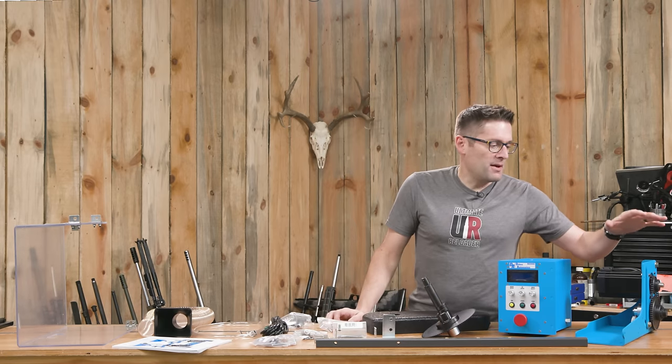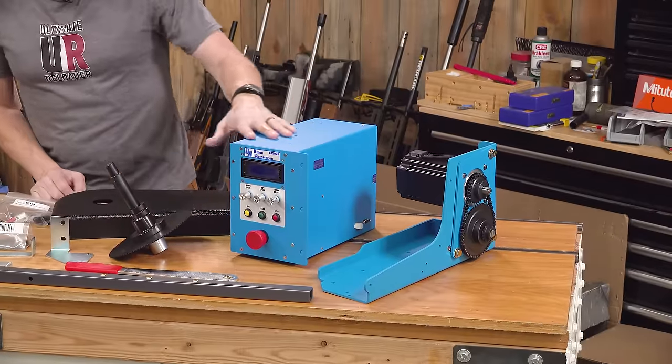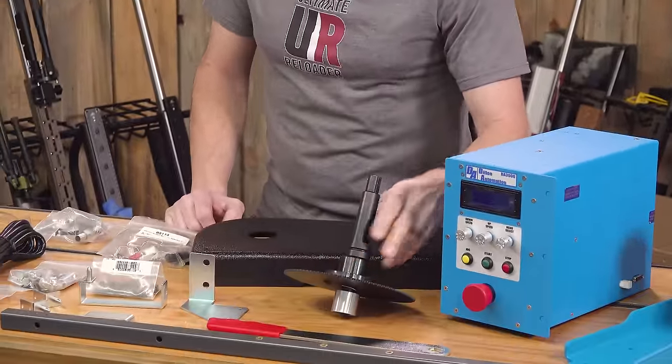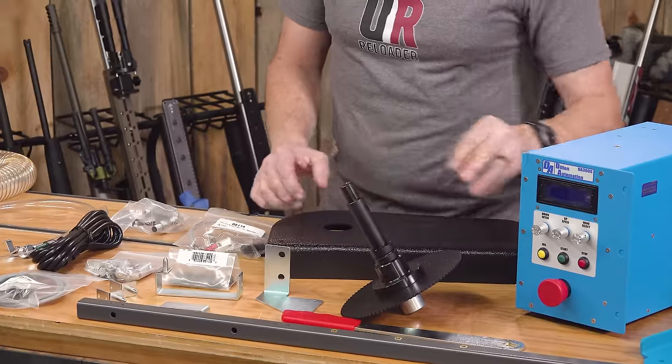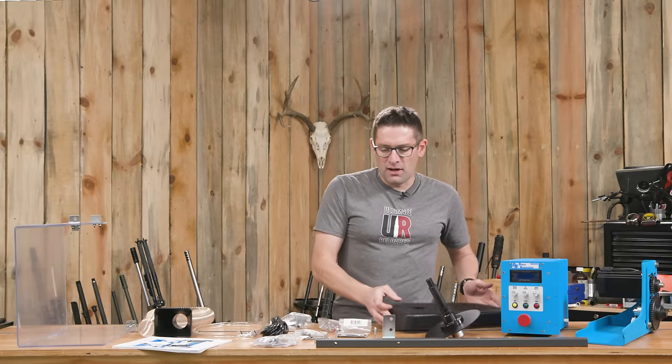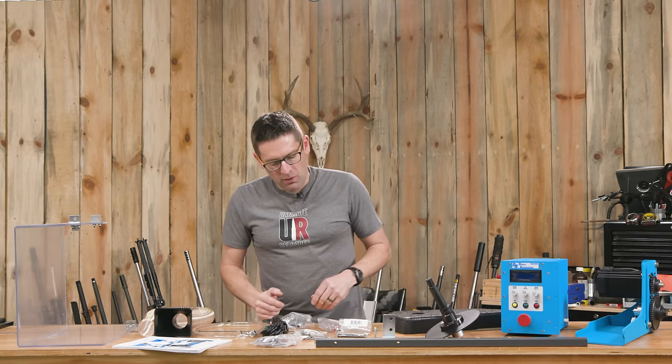We've got the main mounting bracket and motor. We've got the control box. We've got the sprocket. This is going to mount to the press and actuate the press by means of the drive chain, which is right here. We've got a cover. We've got the main mounting pole.